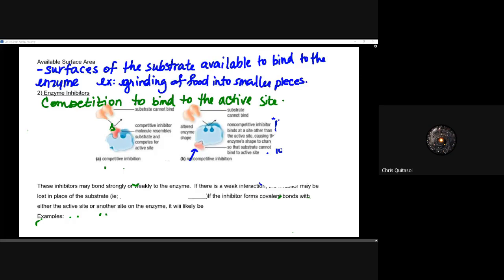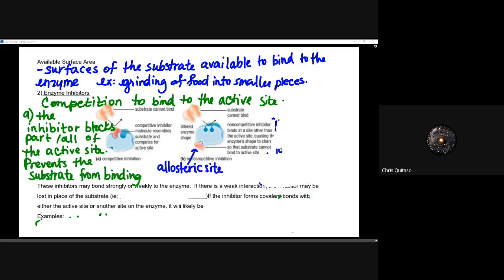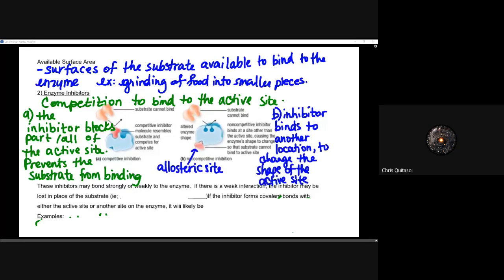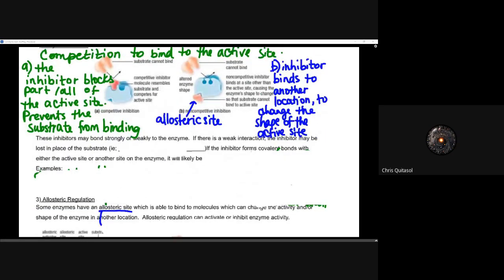Enzyme inhibitors prevent or reduce the number of active sites available. The inhibitor blocks part or all of the active site, preventing the substrate from binding. There are two main ways: first, the inhibitor directly blocks the active site; second, the inhibitor binds to an allosteric site, which changes the active site shape and prevents the substrate from binding. Inhibitors can bind strongly or weakly to the enzyme.